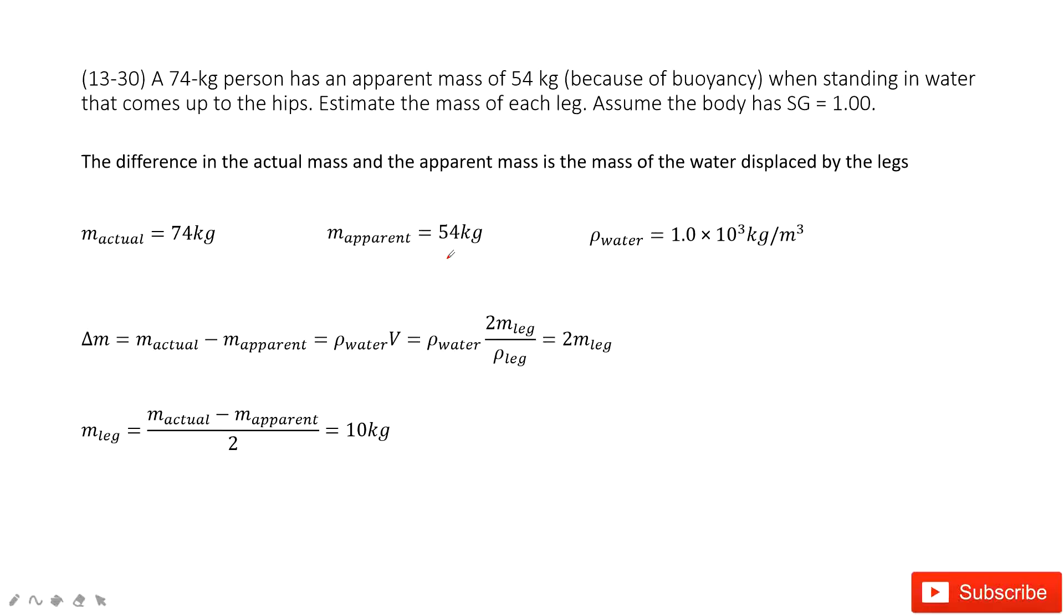So how can we do that? The difference in actual mass and apparent mass is the mass of water displaced by the legs. The apparent mass is given, the actual mass is given, the density of the water is given, and also it tells us the density of the body.